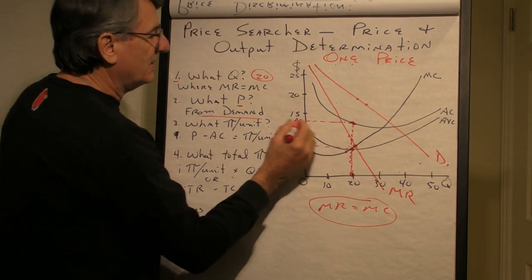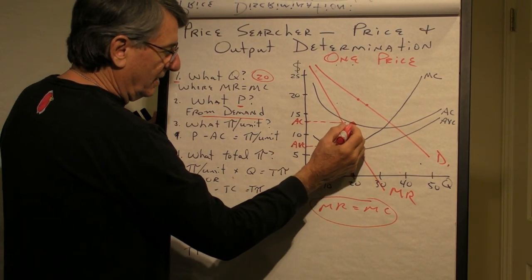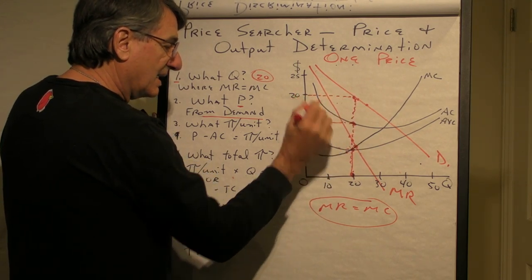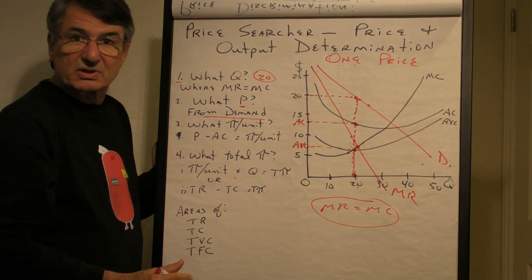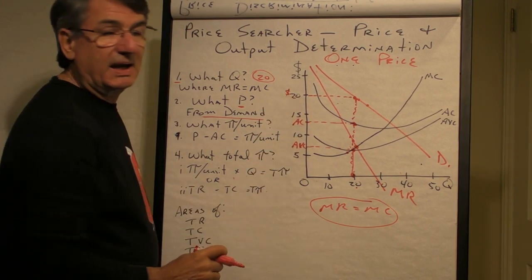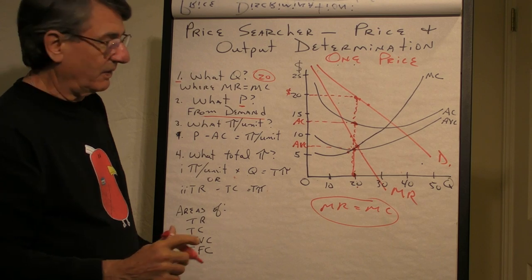This point on the average cost curve says that when you produce 20 units, the average cost of each of those units is about $13, or whatever that is, and keep going up. And this point on the demand curve says, if the quantity you're going to produce is 20 units, then people are willing to pay $20 to get each of them.